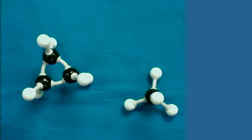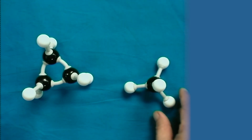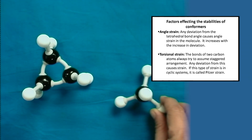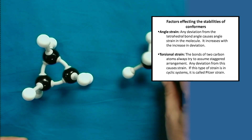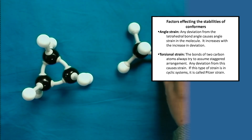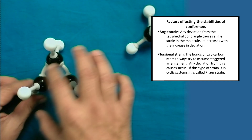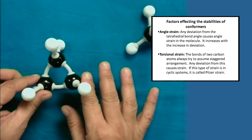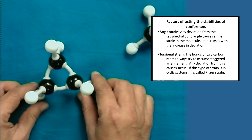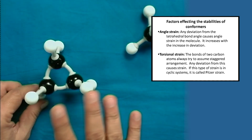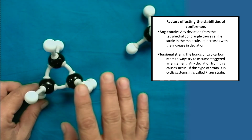To explain Baeyer strain theory we need to understand four different types of definitions, which you may call the factors affecting the stabilities of conformers. The first one is the angle strain. As I explained, the angle strain is due to the deviation from 109 degrees 28 minutes. In the tetrahedral molecule the bond angle of 109 degrees 28 minutes is the standard ideal bond angle. When coming to cyclopropane, it is a planar molecule as Baeyer explained — all three carbon atoms are in one plane — and the bond angle is 60 degrees. This is a deviation from the ideal 109 degrees 28 minutes, so it will have some sort of angle strain.